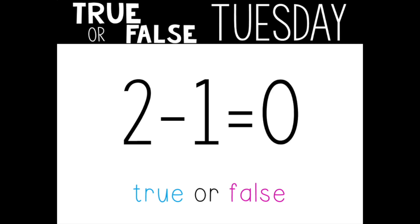Last one. True or false? Two minus one equals zero. Thumbs up or thumbs down? This one is also false. Two minus one does not equal zero. What would you change to make this equation true? I would change the answer — I would change the zero to a one. Two minus one does equal one. Do you see another way to change the equation to make it true?